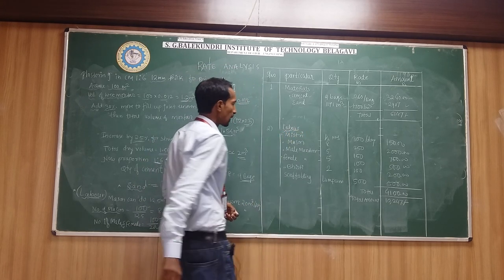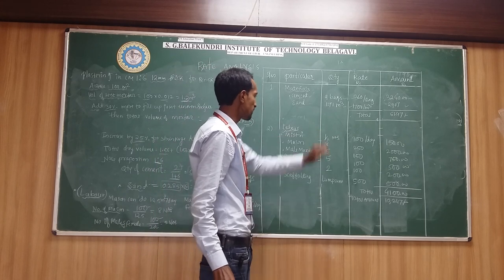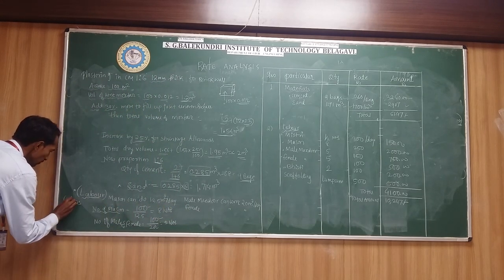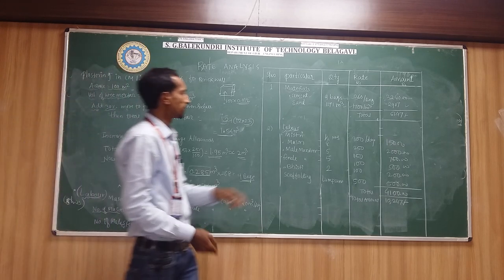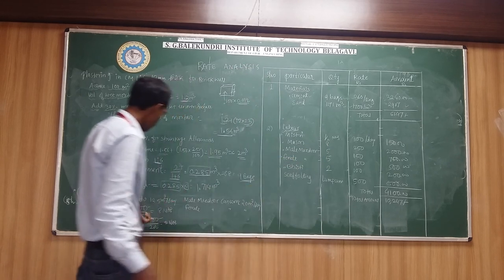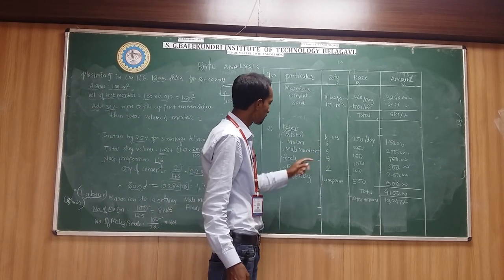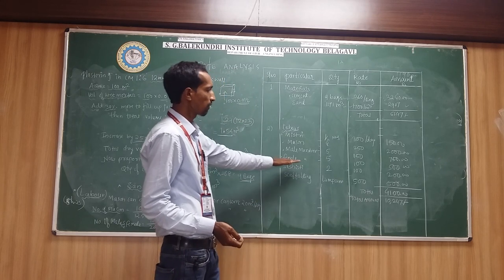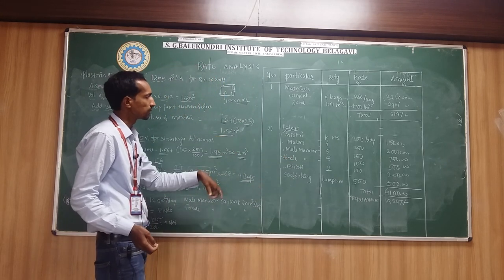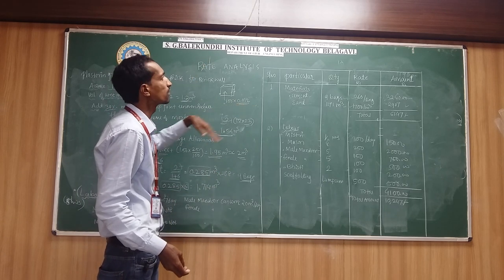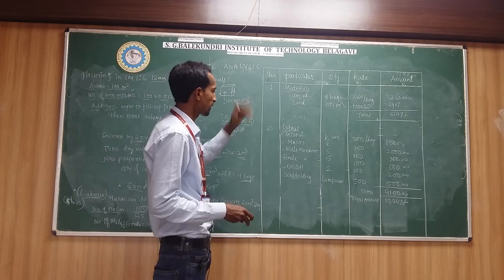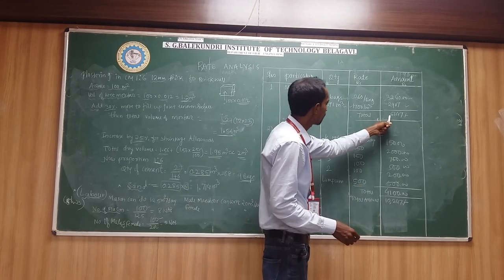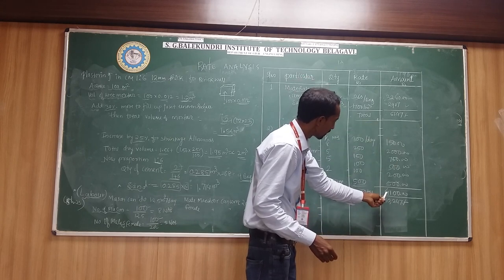Next is the labor. Masons are 8 numbers, calculated on an 8-hour basis. Male and female mazdoor are 5 numbers each. Besti for curing requires 2 numbers. Scaffolding is also required — up to 3 or 4 meters we can construct directly, but at the top scaffolding is needed. Scaffolding is 500 rupees lump sum. The total labor amount is 4100 rupees.